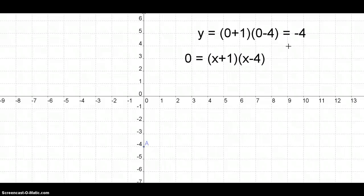Negative one and positive four. So the two x-intercepts are negative one and positive four. Let's put a plot at negative one and a plot at positive four.